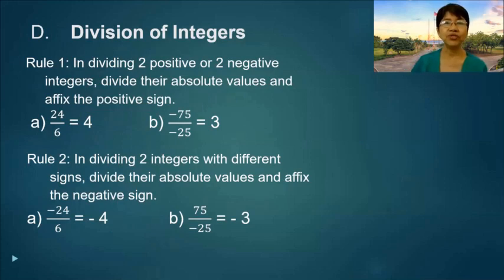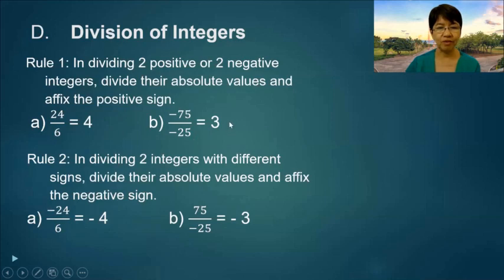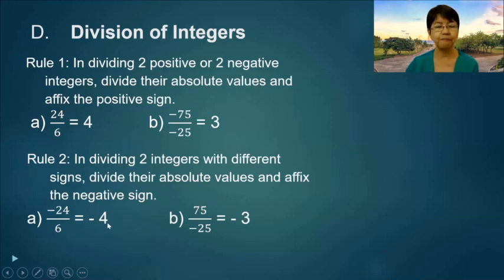Division of integers. Rule number one: in dividing two positive or two negative integers, divide their absolute values and affix the positive sign. So negative 75 over negative 25 is equal to positive 3. Rule number two: in dividing two integers with different signs, divide their absolute values and affix the negative sign. So negative 24 over 6 is negative 4, and 75 over negative 25 is negative 3.